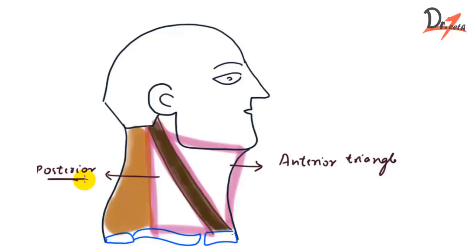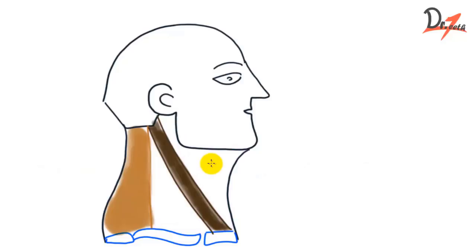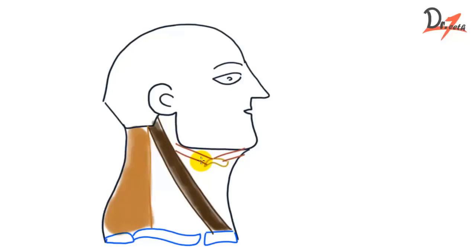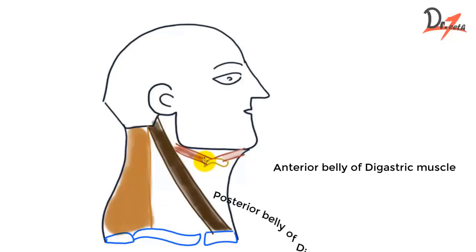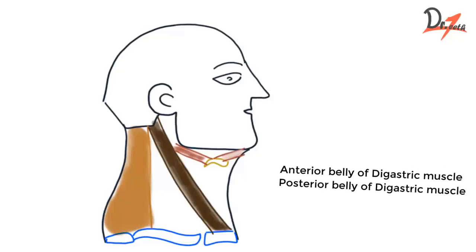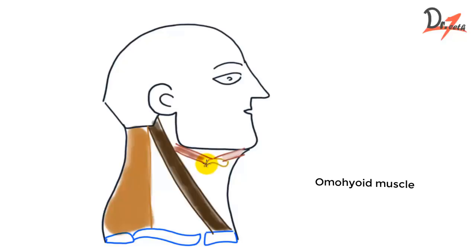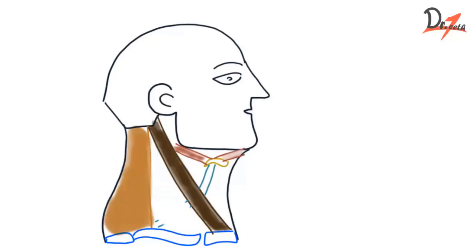First of all we'll study about the anterior triangle. In the anterior part of the neck we have the hyoid bone, and we have a muscle called the digastric muscle. The digastric muscle has two bellies — the anterior belly towards the front and the posterior belly towards the back. We also have one more muscle in the anterior triangle: the omohyoid muscle, specifically the superior belly of the omohyoid, because the inferior belly is in the posterior triangle.